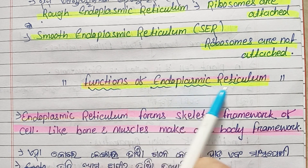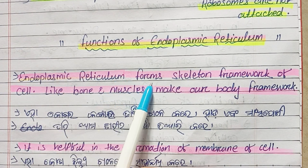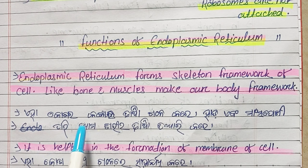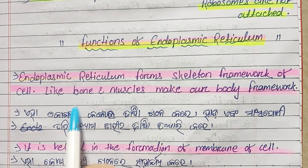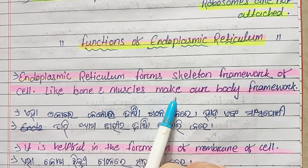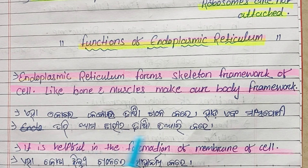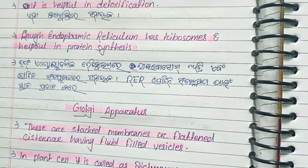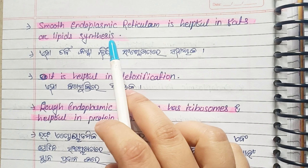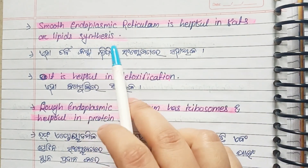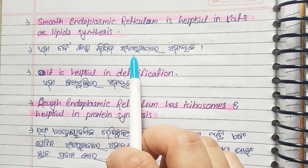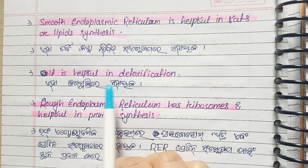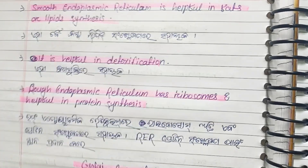The function of the endoplasmic reticulum is that it forms a skeletal framework for the cell. It is helpful in the formation of the cell membrane. Smooth endoplasmic reticulum is helpful in fat and lipid synthesis, and also in detoxification.